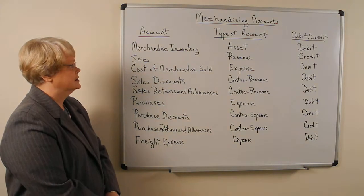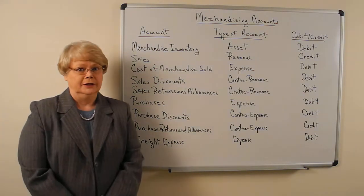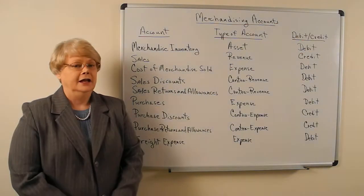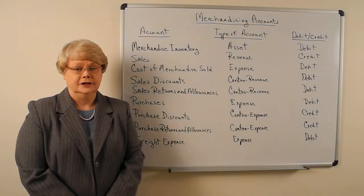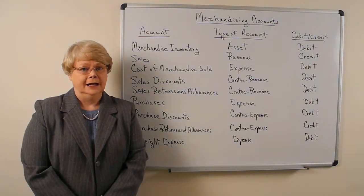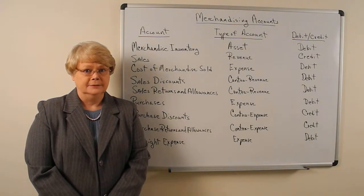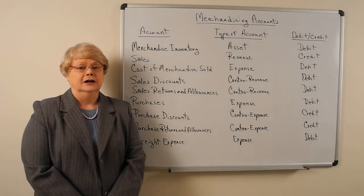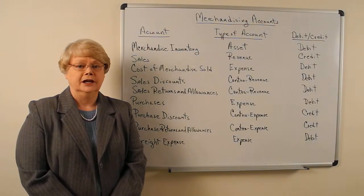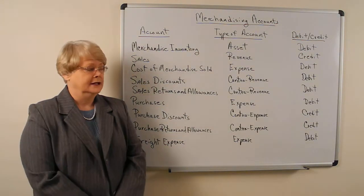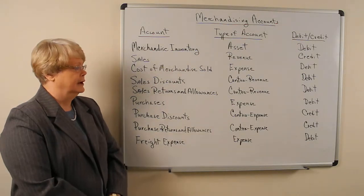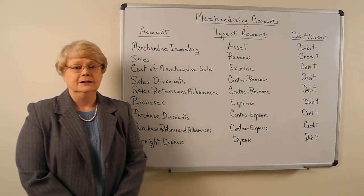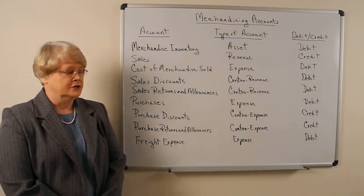The first one is merchandise inventory. This account is an asset, and as an asset it is increased with a debit and has a normal debit balance. The second one is sales. This would be our revenue account for the merchandise that we're selling, and it has a credit balance and is increased with a credit.